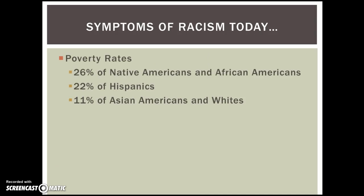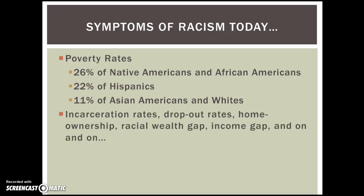Symptoms of racism can be seen in the statistics today. Poverty rates among Native Americans and African Americans are higher than those of whites and Asian Americans. Although Asian Americans are a minority, we see them on the low end of the poverty rates. That can be explained by a selective migration process where the U.S. selects Asian Americans from wealthy and educated countries. When it comes to things like incarceration rates, dropout rates, homeownership, racial wealth gap, income gap, and on and on, we see that symptoms of racism continue to exist today.